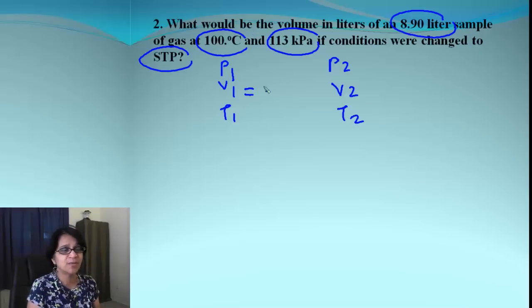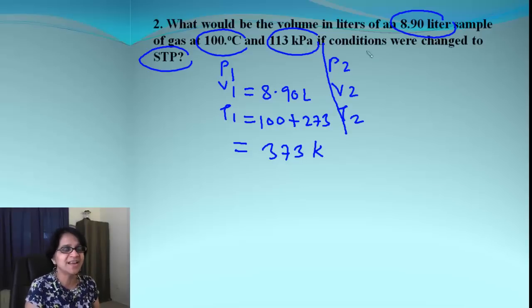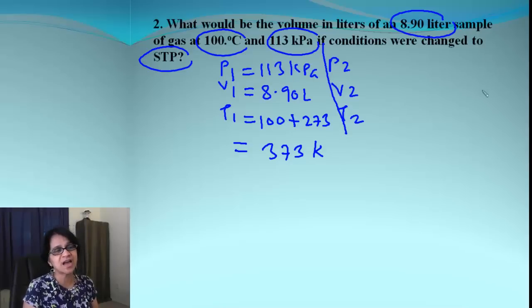It says what is the volume in liters of an 8.9 liter sample. So whichever volume come first, I'm going to write down that as 8.9 liters. Of a gas at 100 degrees, temperature must be 100 degrees. Remember it's Celsius. So I can add 273 to make sure I get the answer in Kelvin which is 373 Kelvin. And then the pressure is 113 kilopascal. So the conditions are now changed to STP.